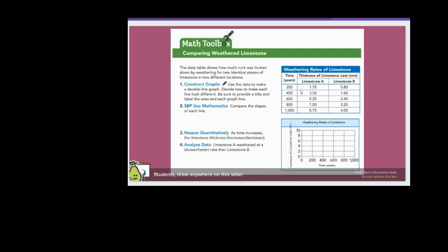Now I'm going to put the information for my lines. So limestone A will be pink. So in 200 years, it's 1.75 millimeters of loss. In 400 years, it's 3.5. In 600 years, it's 5.25. In 800 years, it's 7. And in 1,000 years, it's 8.75.